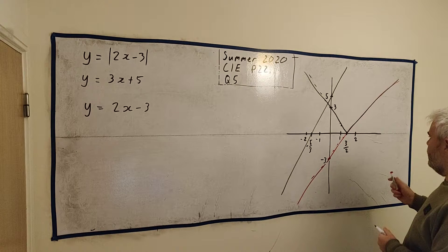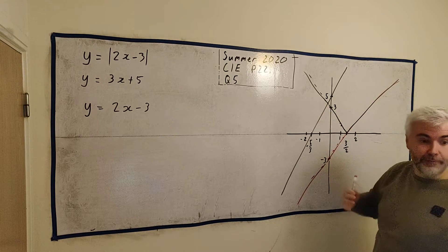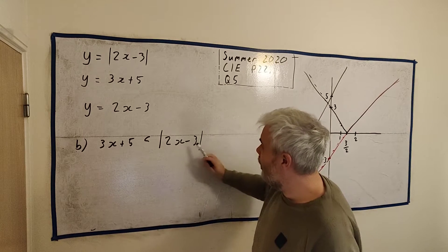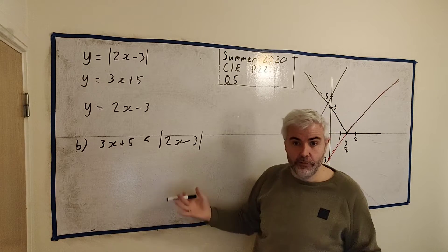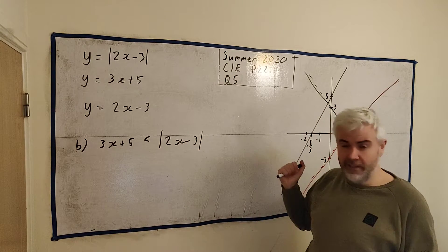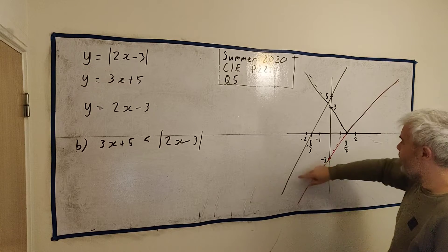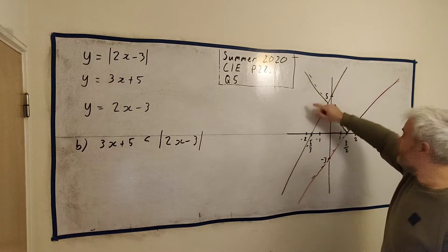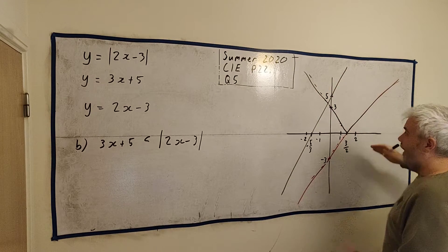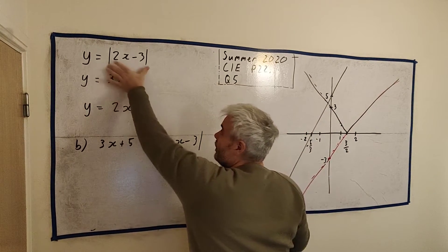I would probably like to see this intersection point marked, and we're going to need that point for part b. Part b asks: 3x plus 5 is less than the absolute value of 2x minus 3. Now there are two ways to do this — we can do this using algebra, squaring both sides to get rid of the absolute value. But there's actually an easier way: we can solve this by looking at the graph, because 3x plus 5 is this line and the absolute value of 2x minus 3 is this other line.